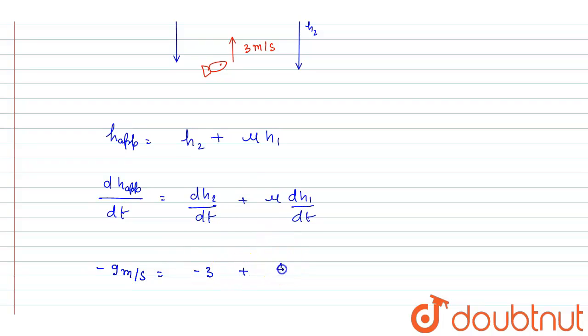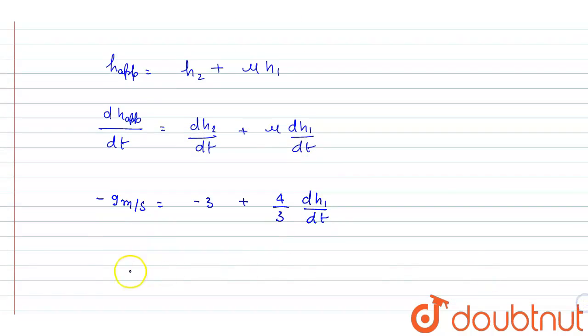μ of the water is given, it is 4/3, and we want this dh₁/dt, right? So if you calculate this, if you see, this is 4/3 dh₁/dt equals minus 6/3.